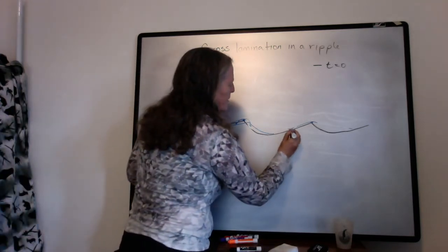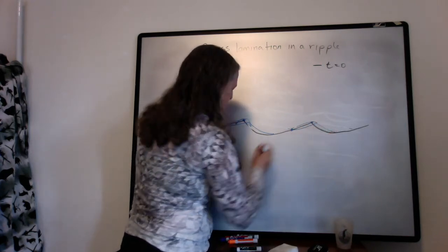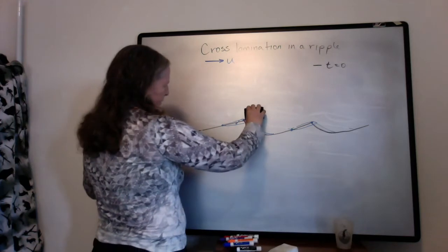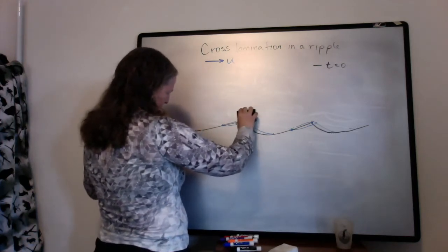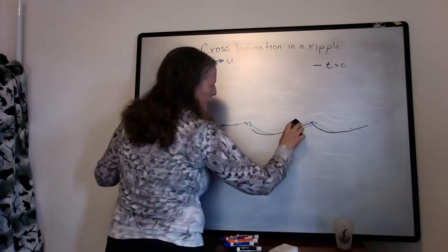And the same thing happens on the next ripple here. So I'm going to erase the grains that have moved here.